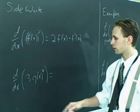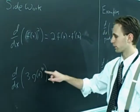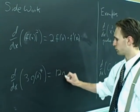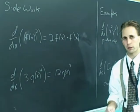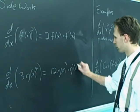Similarly, for this thing here, differentiate this. The outer function is 3 something to the fourth. The derivative is going to be 12 g of x cubed. You're going to multiply that by the derivative of the inside, which is going to be g prime of x.